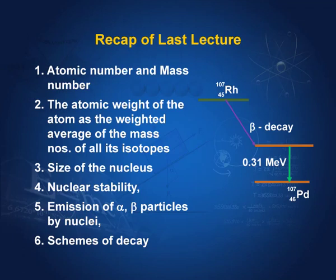For example, rhodium-107 decays by emitting a beta particle and leaves the daughter nucleus in an excited state. The nucleus then comes down to the ground state by emitting a gamma particle. So this is what we did last time.